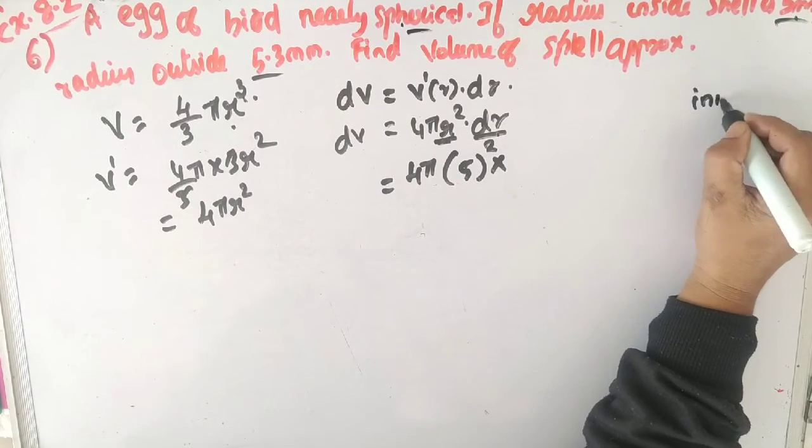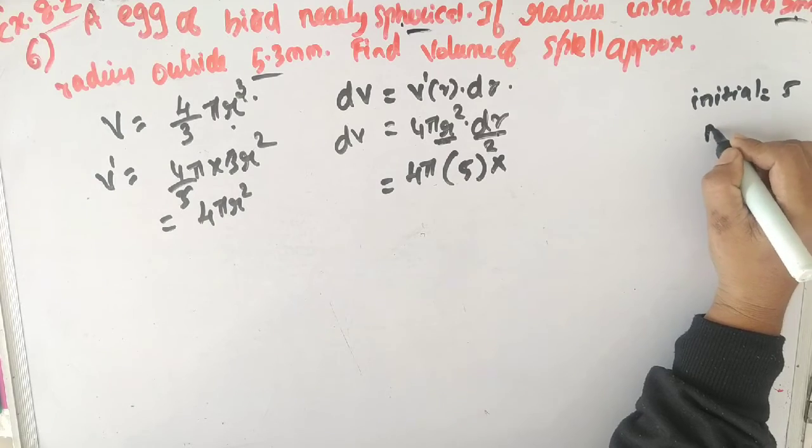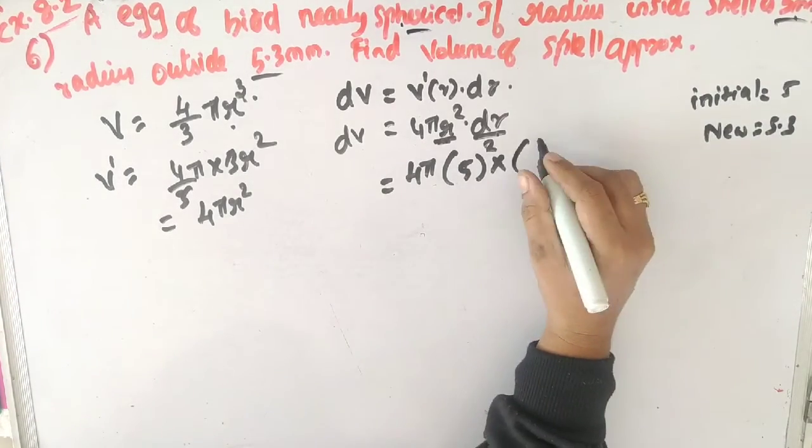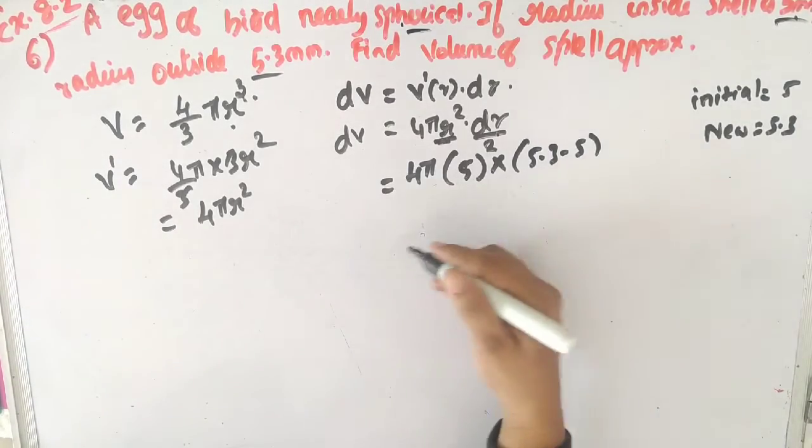dr is the new value minus old value. So dr equals 5.3 minus 5.